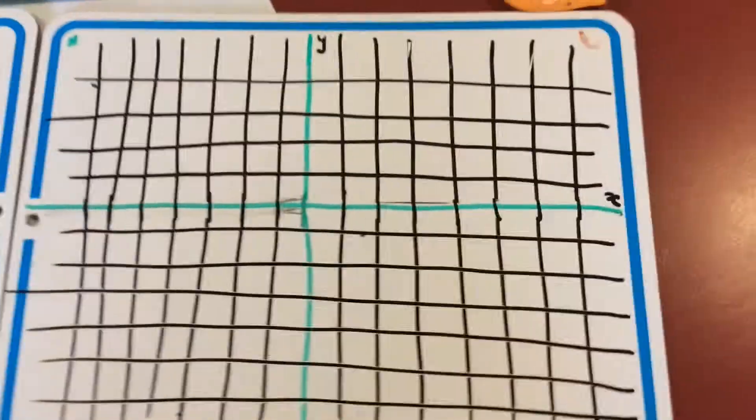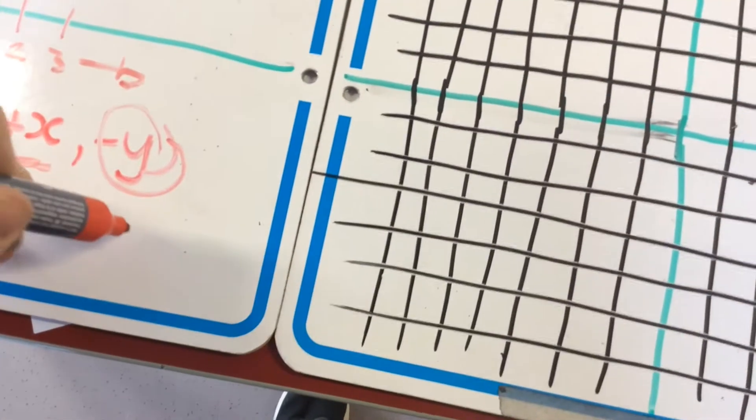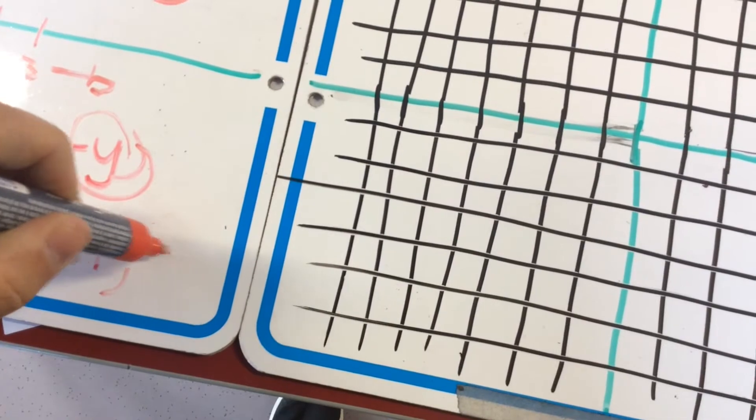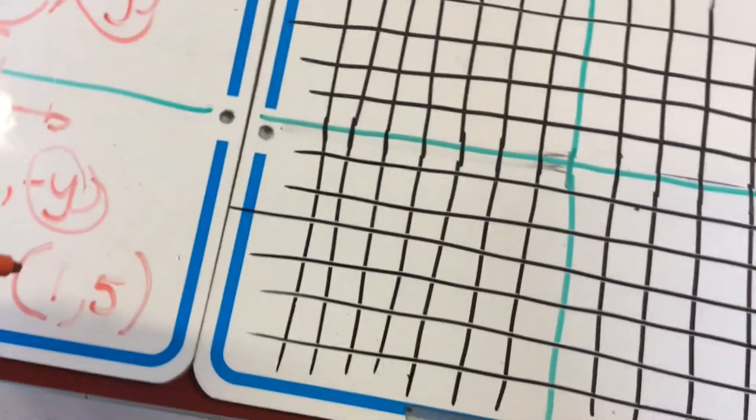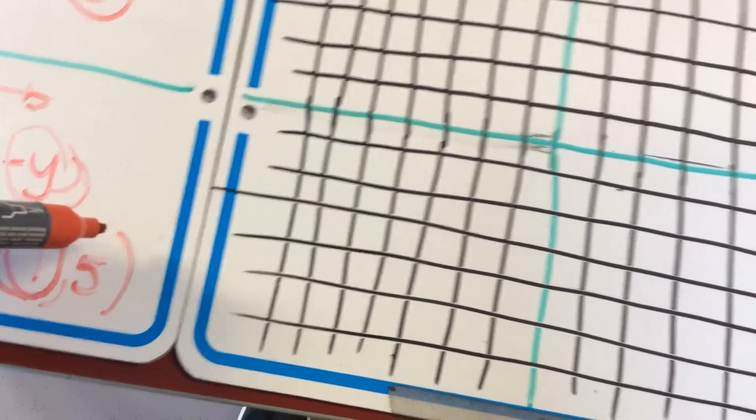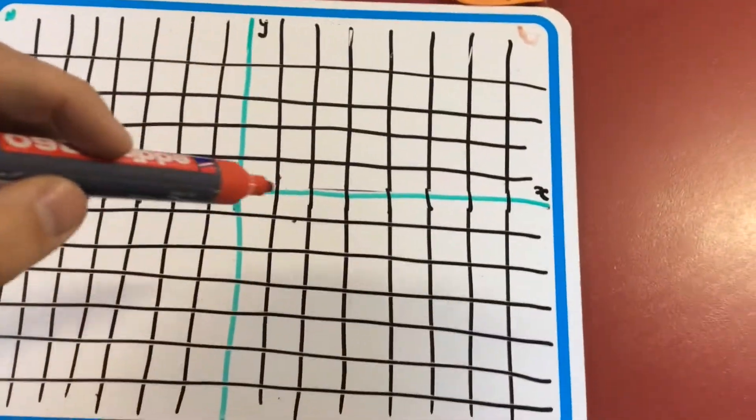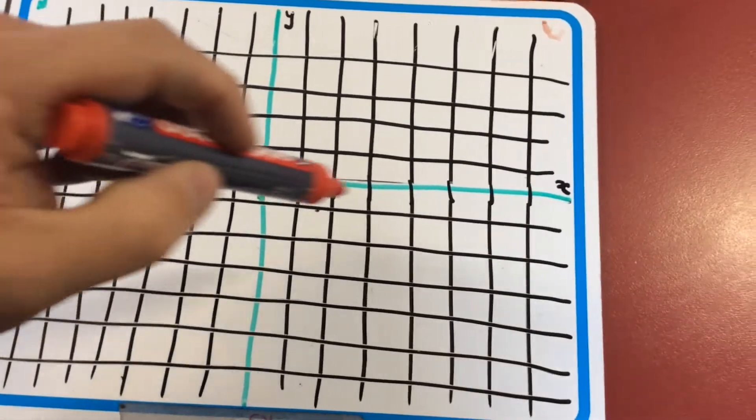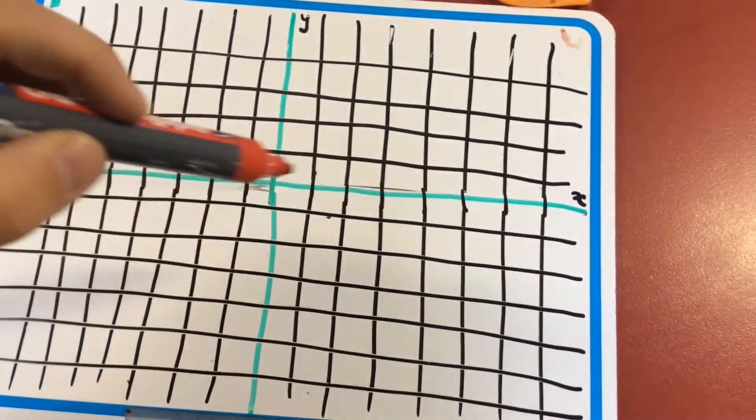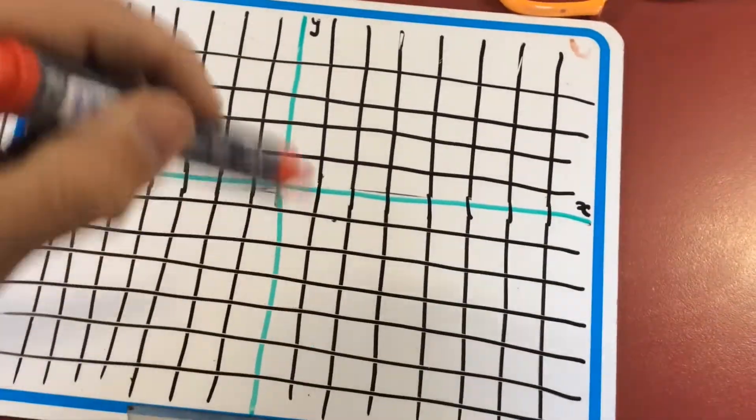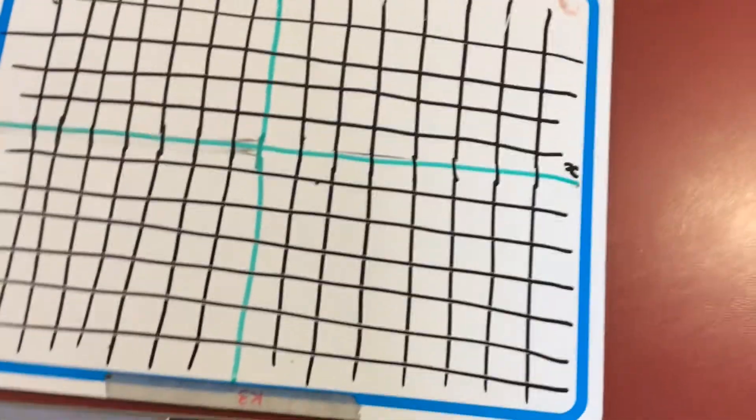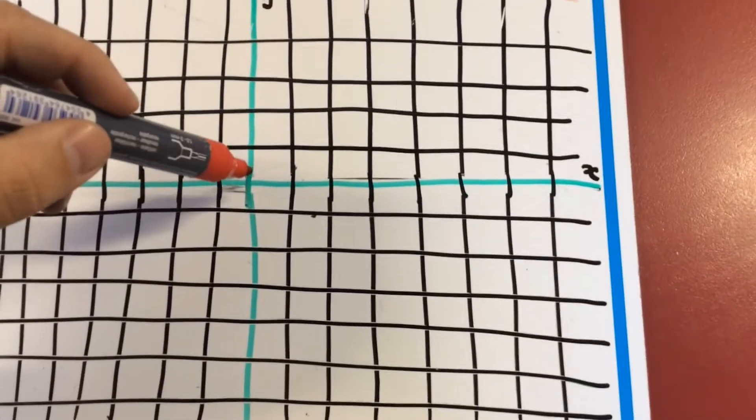Now if I'm going to try and find coordinates on this graph, I need to remember about my quadrants - those sections there. So let's say I'm trying to find these coordinates (1,5). One, the first value in a coordinate, is always x. X is along this line here, the horizontal one. So if I'm looking for one, I go here and I count one that way.